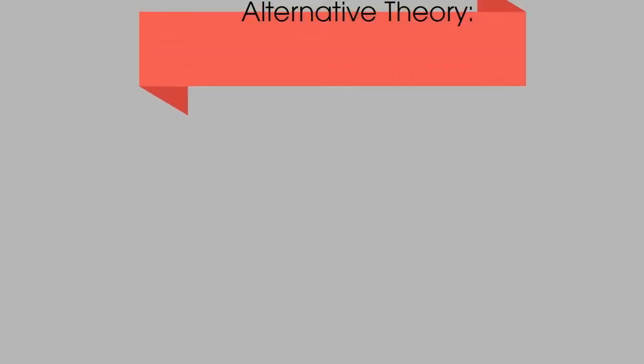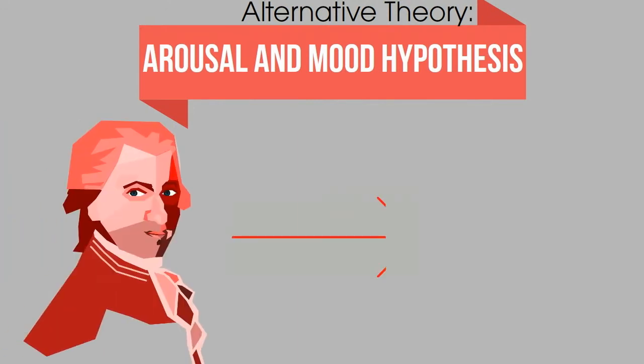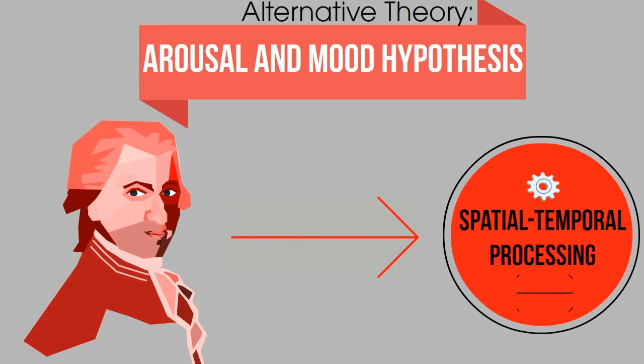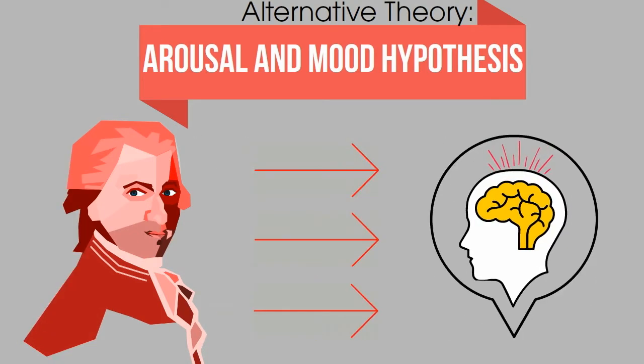An alternative theory has been proposed over recent years as the arousal and mood hypothesis. Instead of suggesting that Mozart has a direct link to spatial-temporal processing, Mozart could instead act as a stimulus to improve one's emotional mood and state, which in turn would improve their cognitive performance.